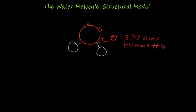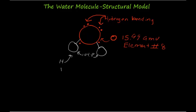Oxygen shares two of those six electrons with the hydrogen atoms via covalent bonding, leaving four unbonded electrons remaining. These four electrons are shared with hydrogen atoms of other water molecules through the process of hydrogen bonding rather than covalent bonding. The two hydrogen atoms are located here, situated about 104.4 degrees apart from one another.